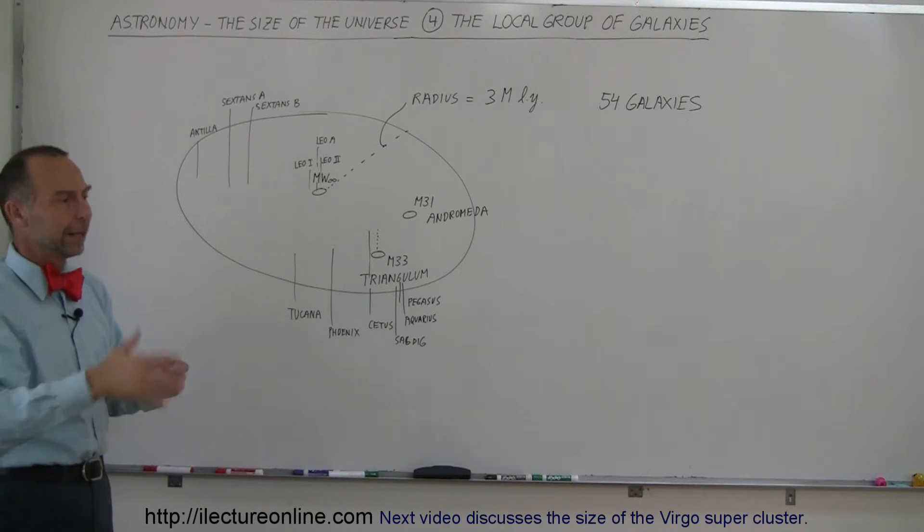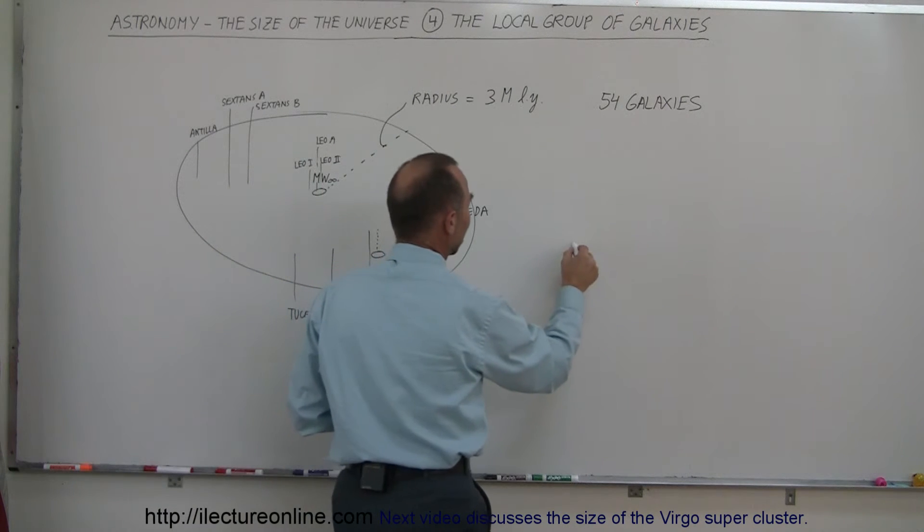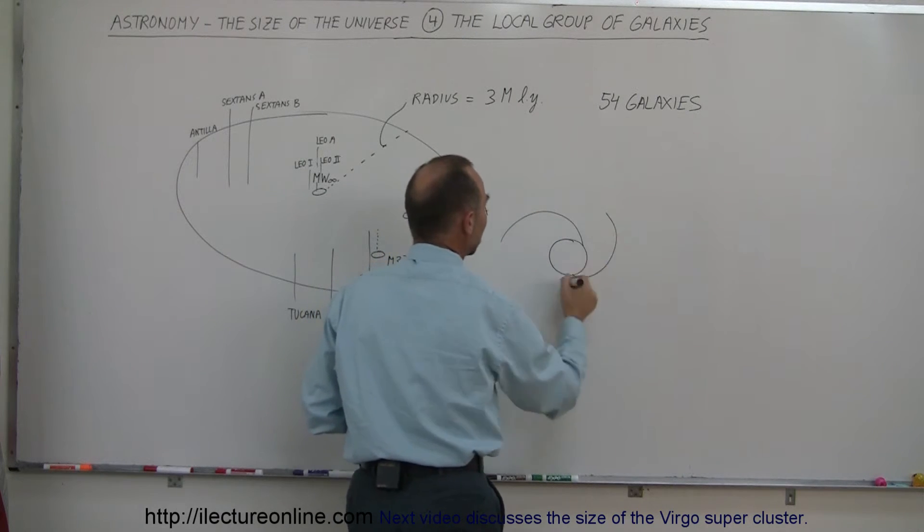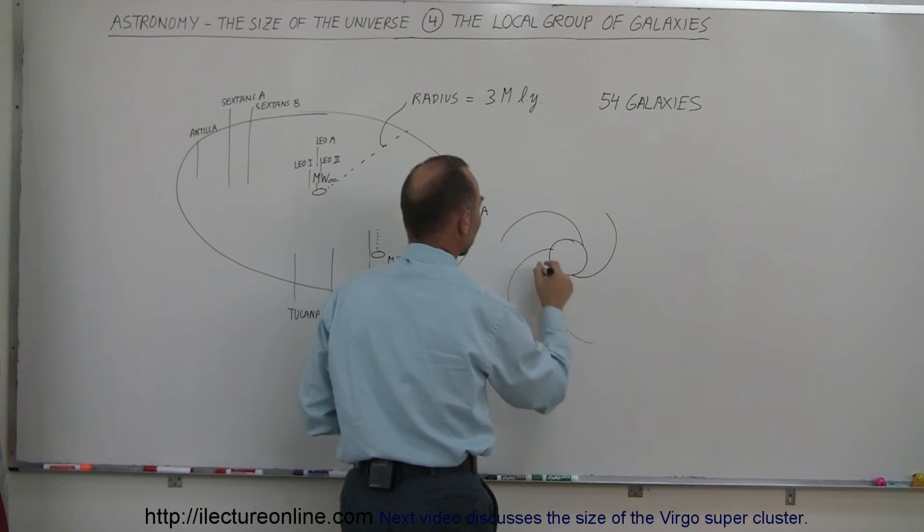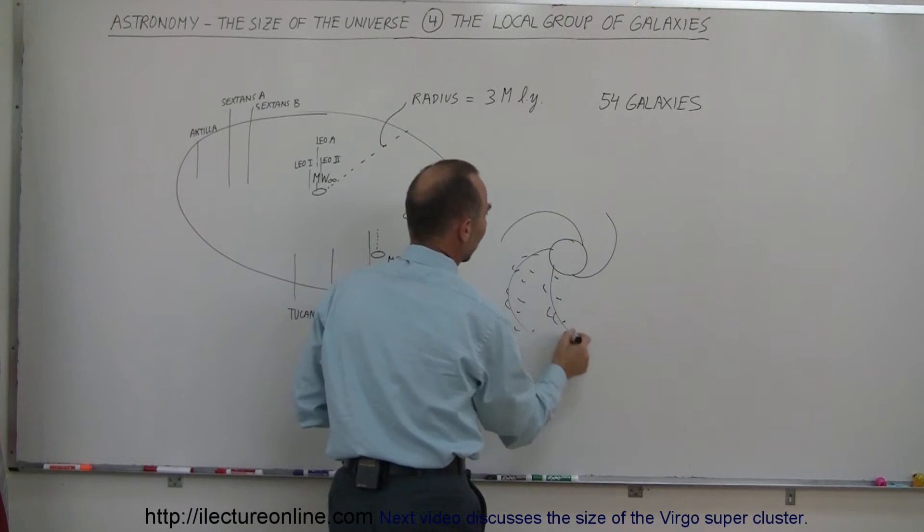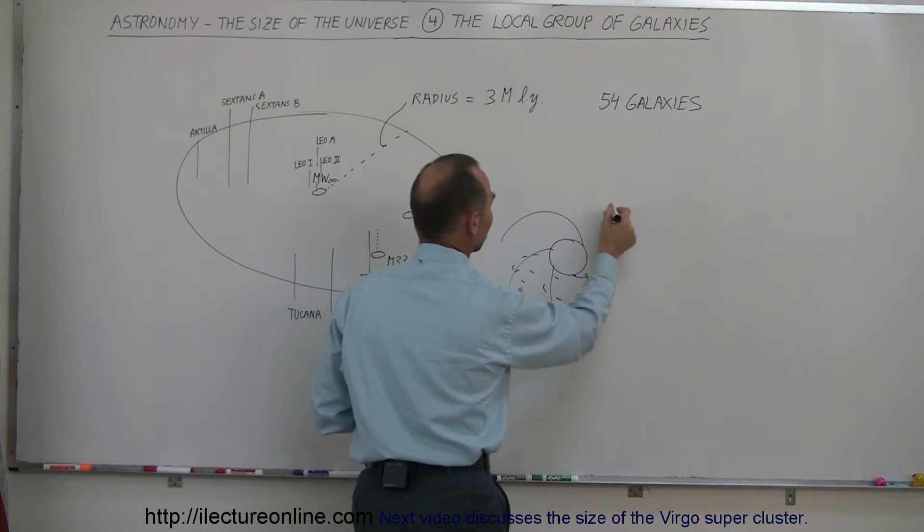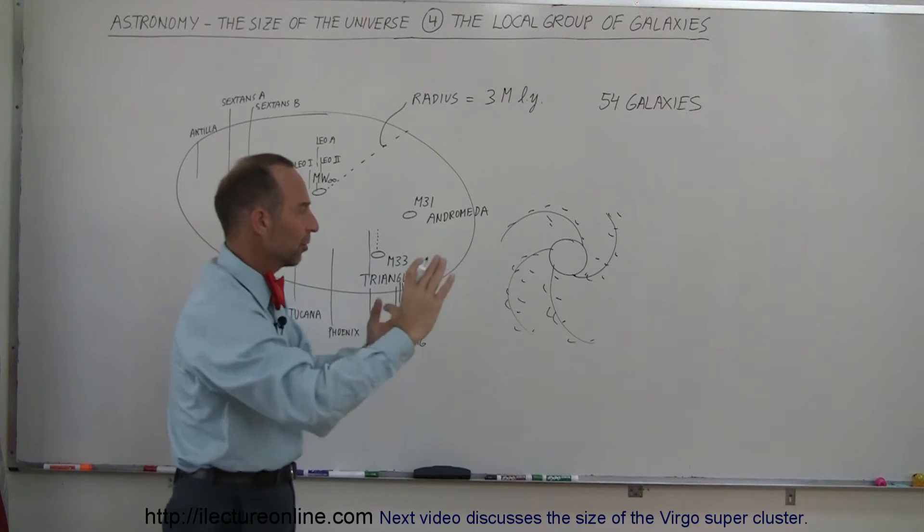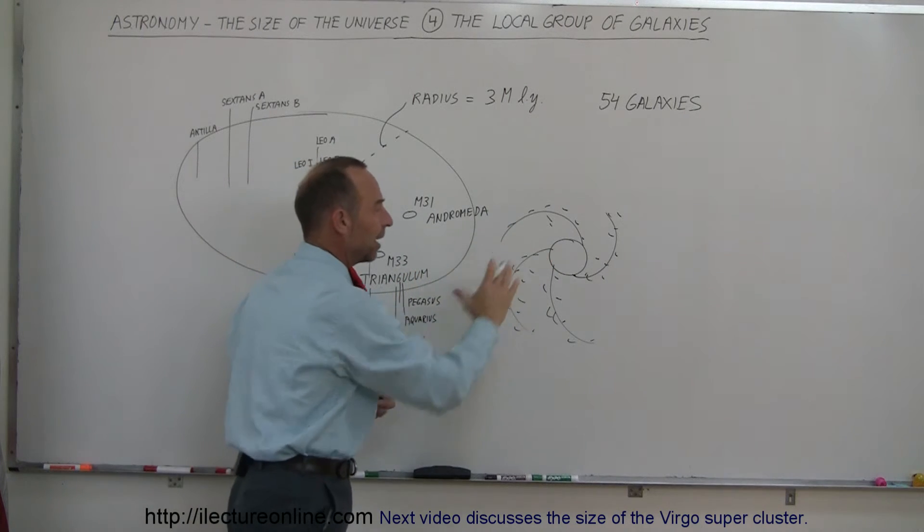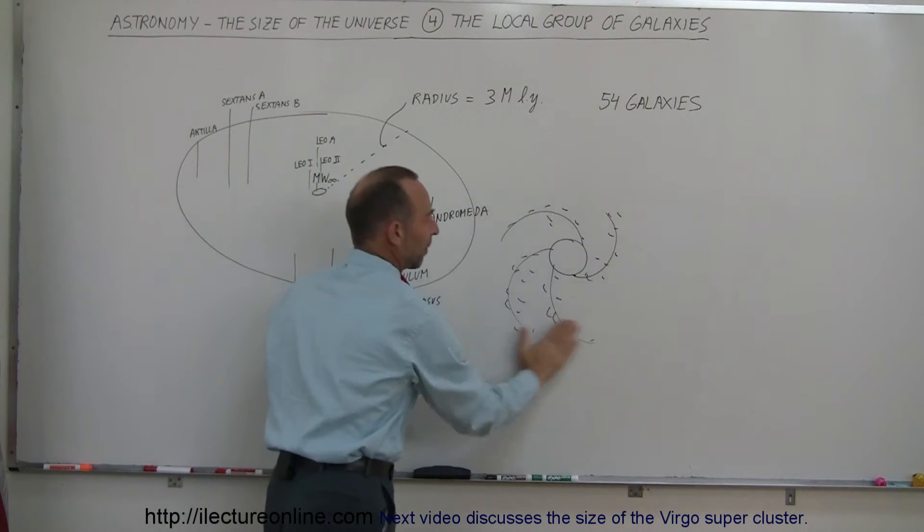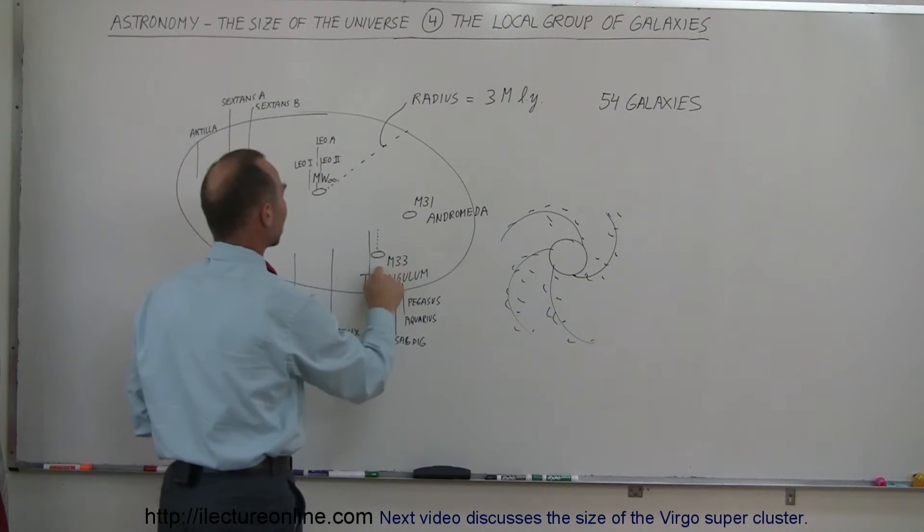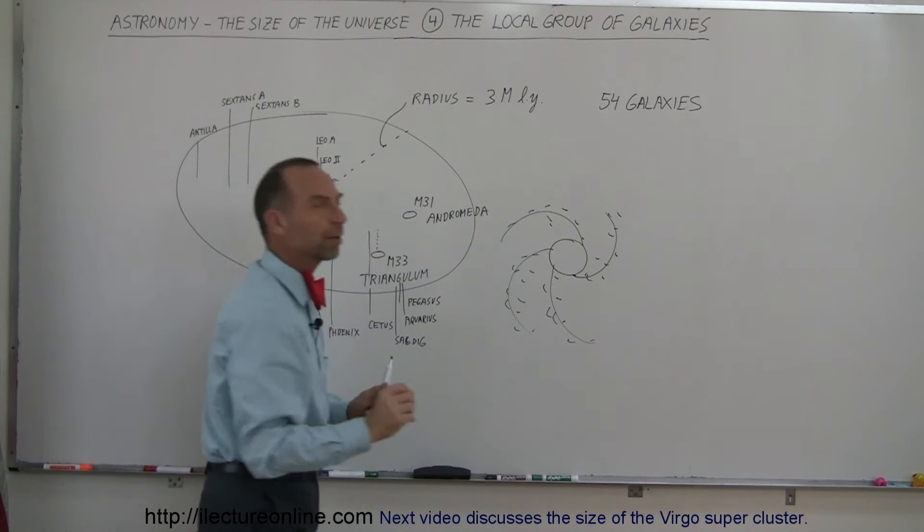Spiral galaxies have a central bulge that is very dense with stars and then spiral arms that emanate away from the center, populated with stars and nebulas. They are typically pancake-shaped. Here we're looking at one head-on. The bulge is like this, and then we have a pancake-shaped region filled with stars. The three big galaxies are spiral galaxies.